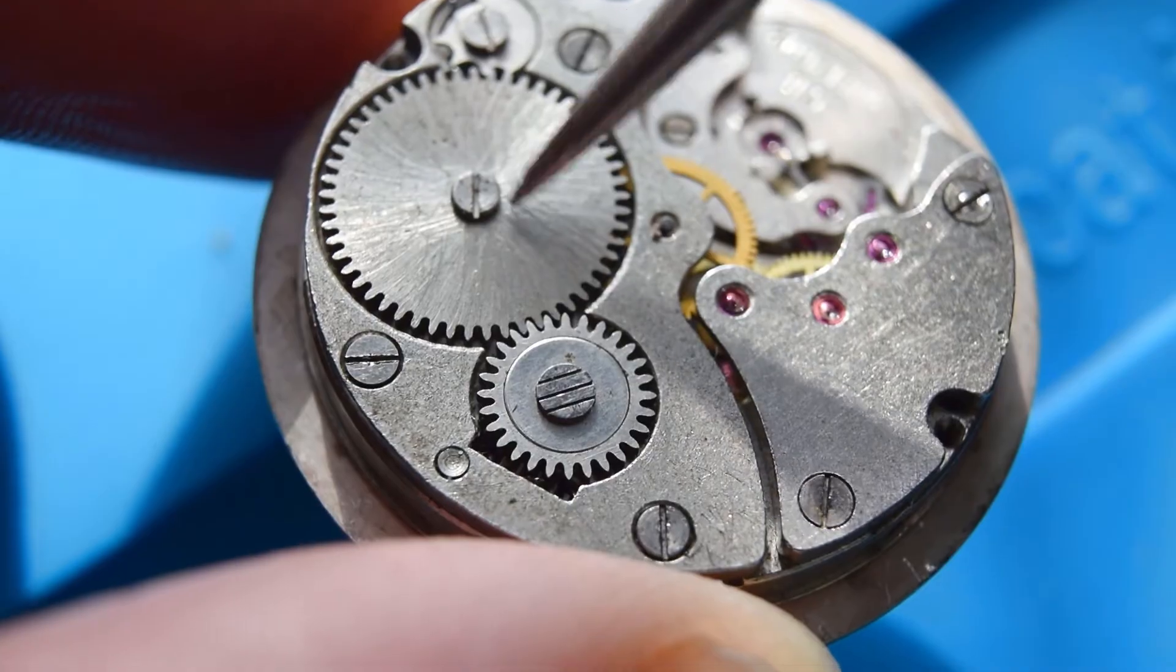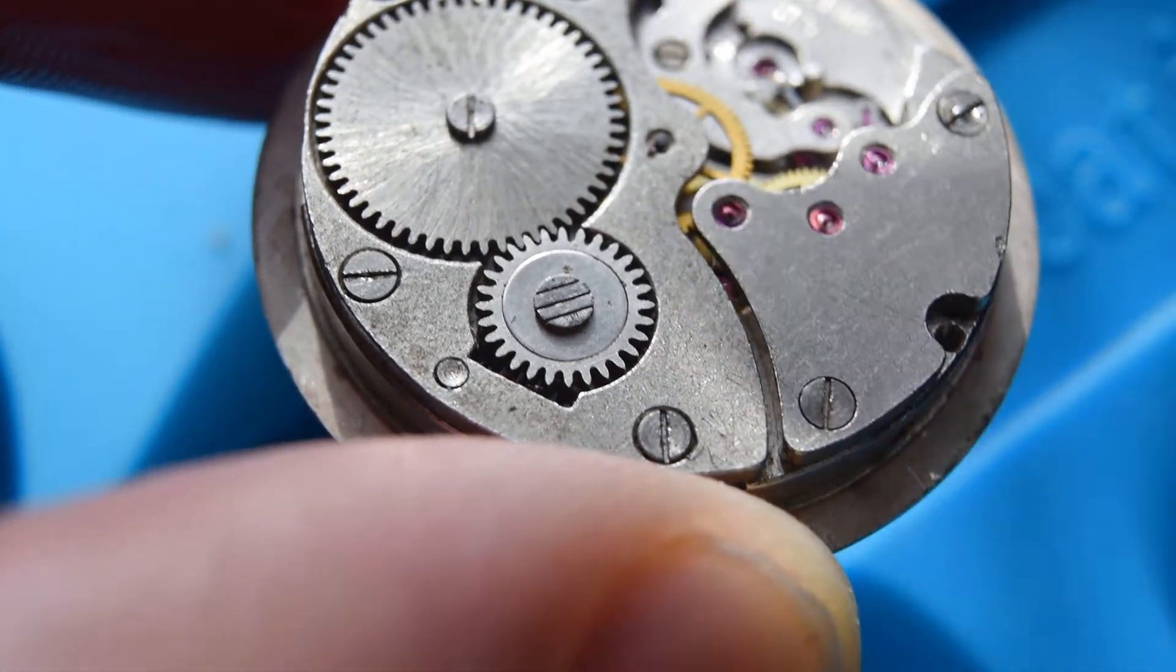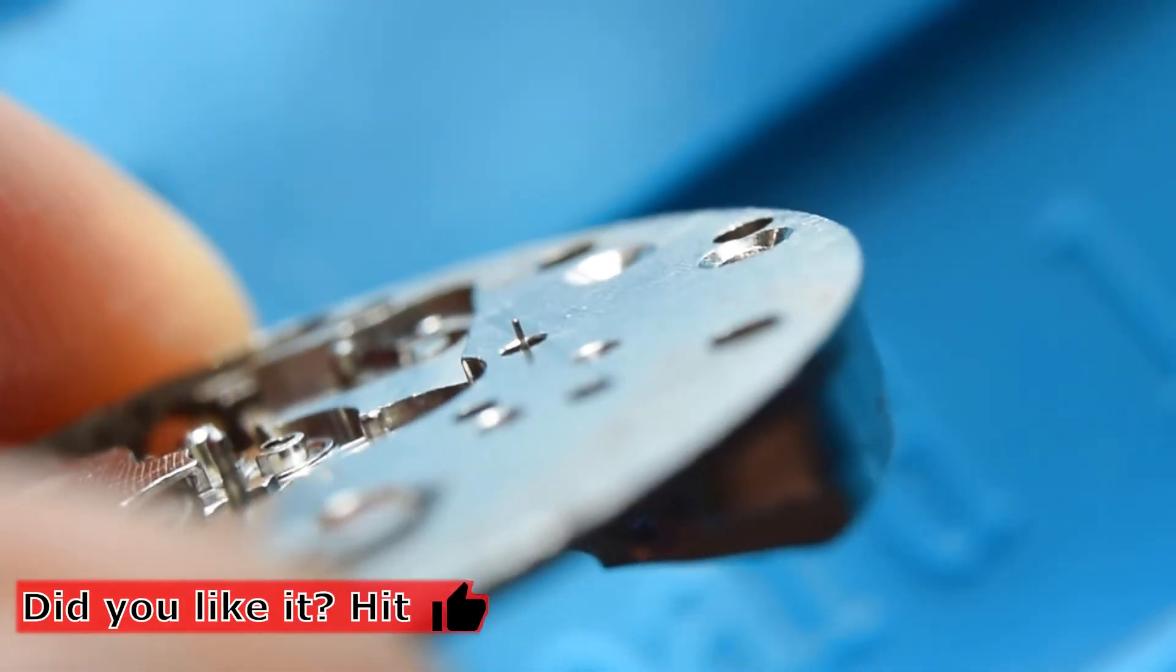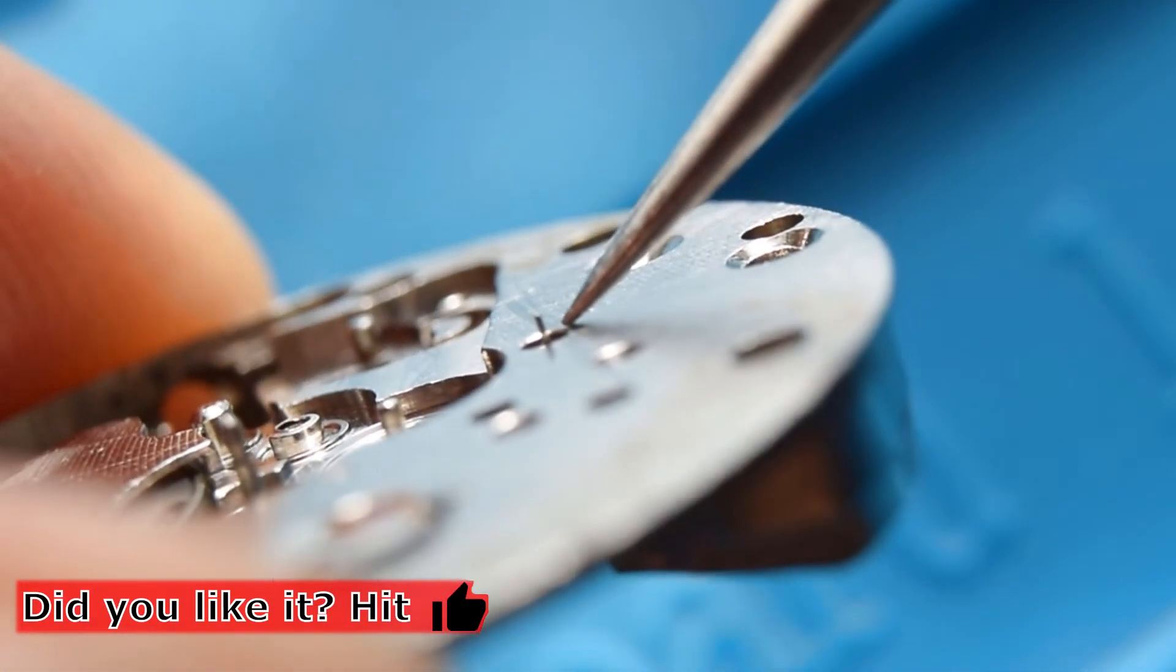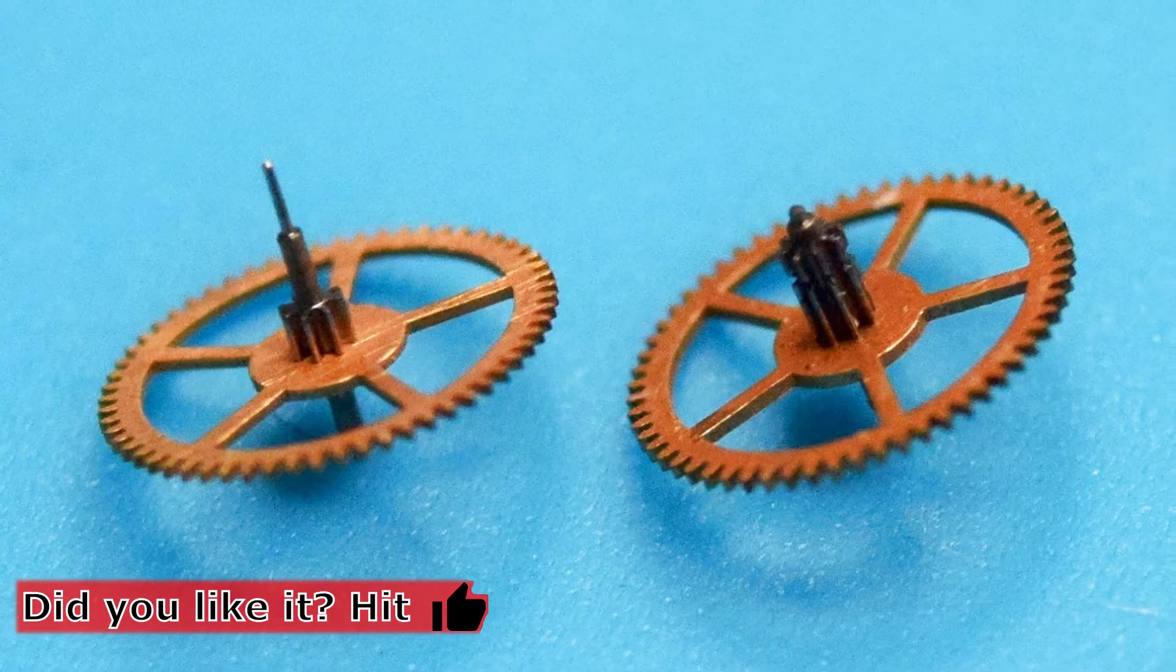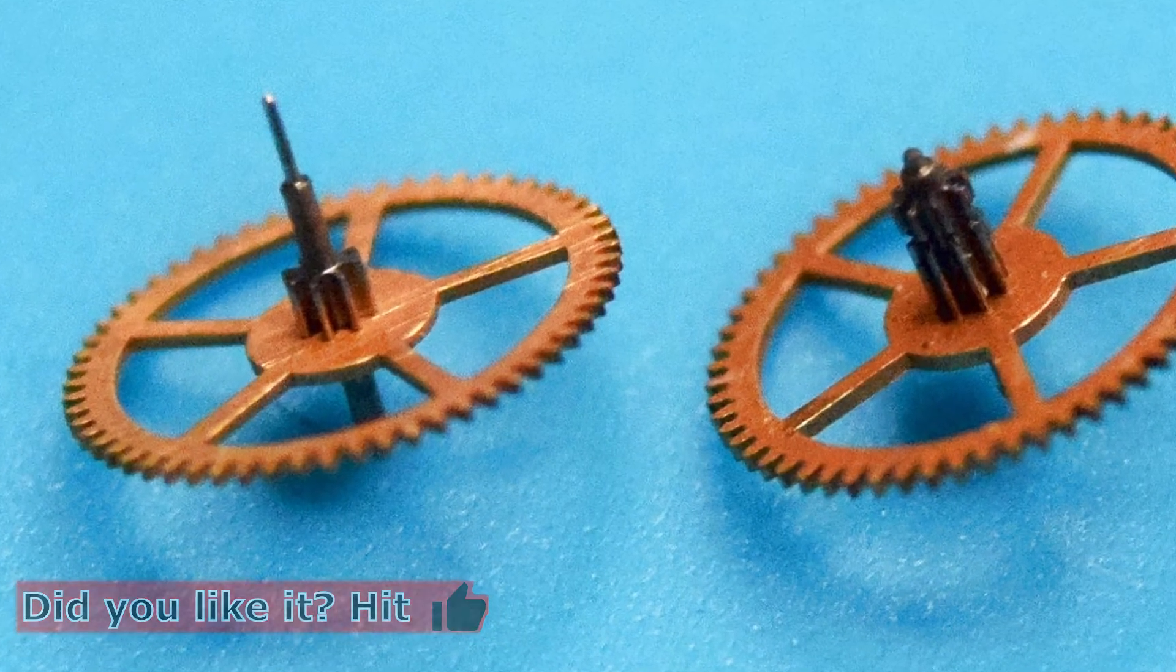I'm using here also a different barrel with a different main spring, which has a different barrel arbor. I will also have to replace it, and the main spring is from this kind of movement, so it is a newer version. I also found a replacement for the fourth wheel with the second pin.